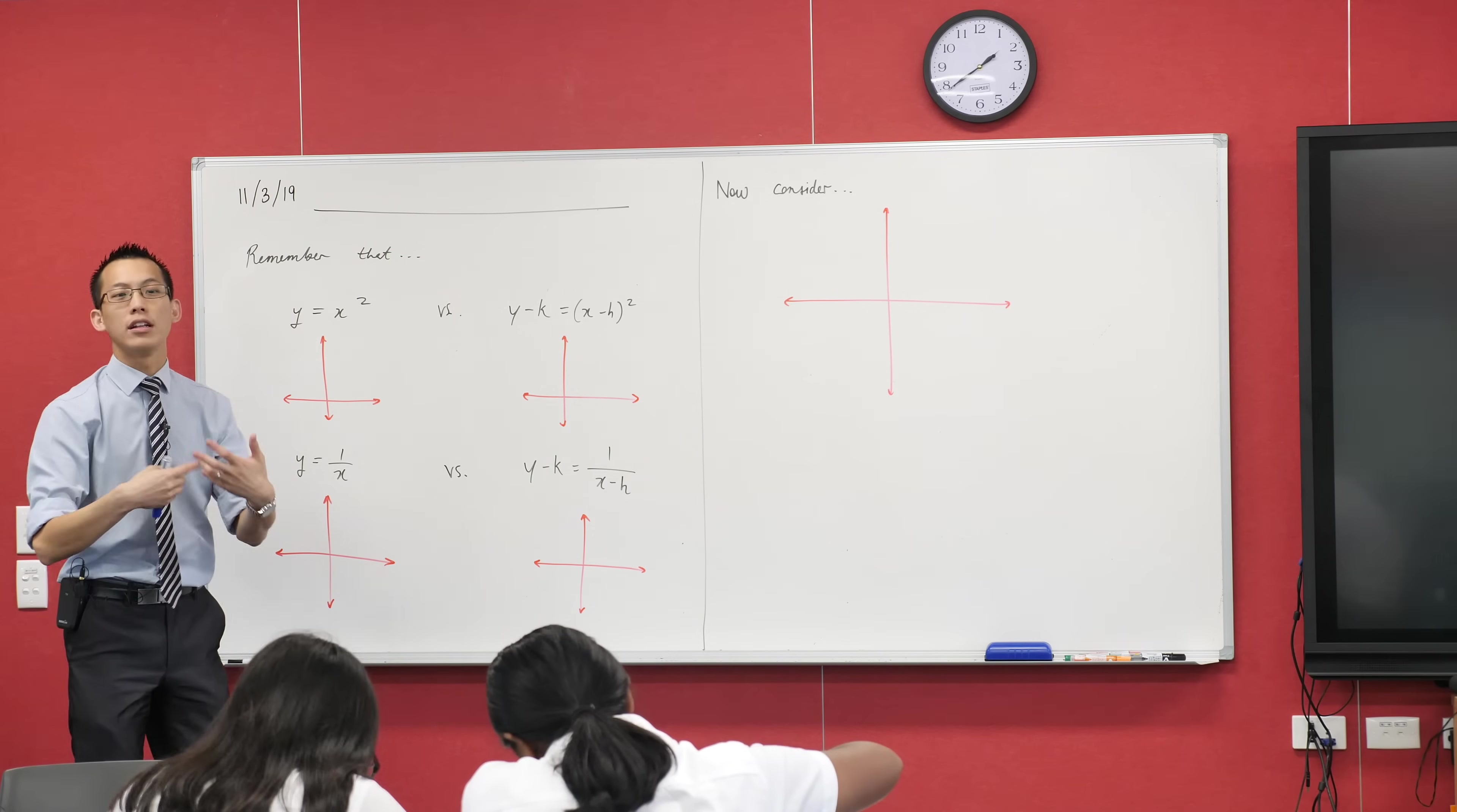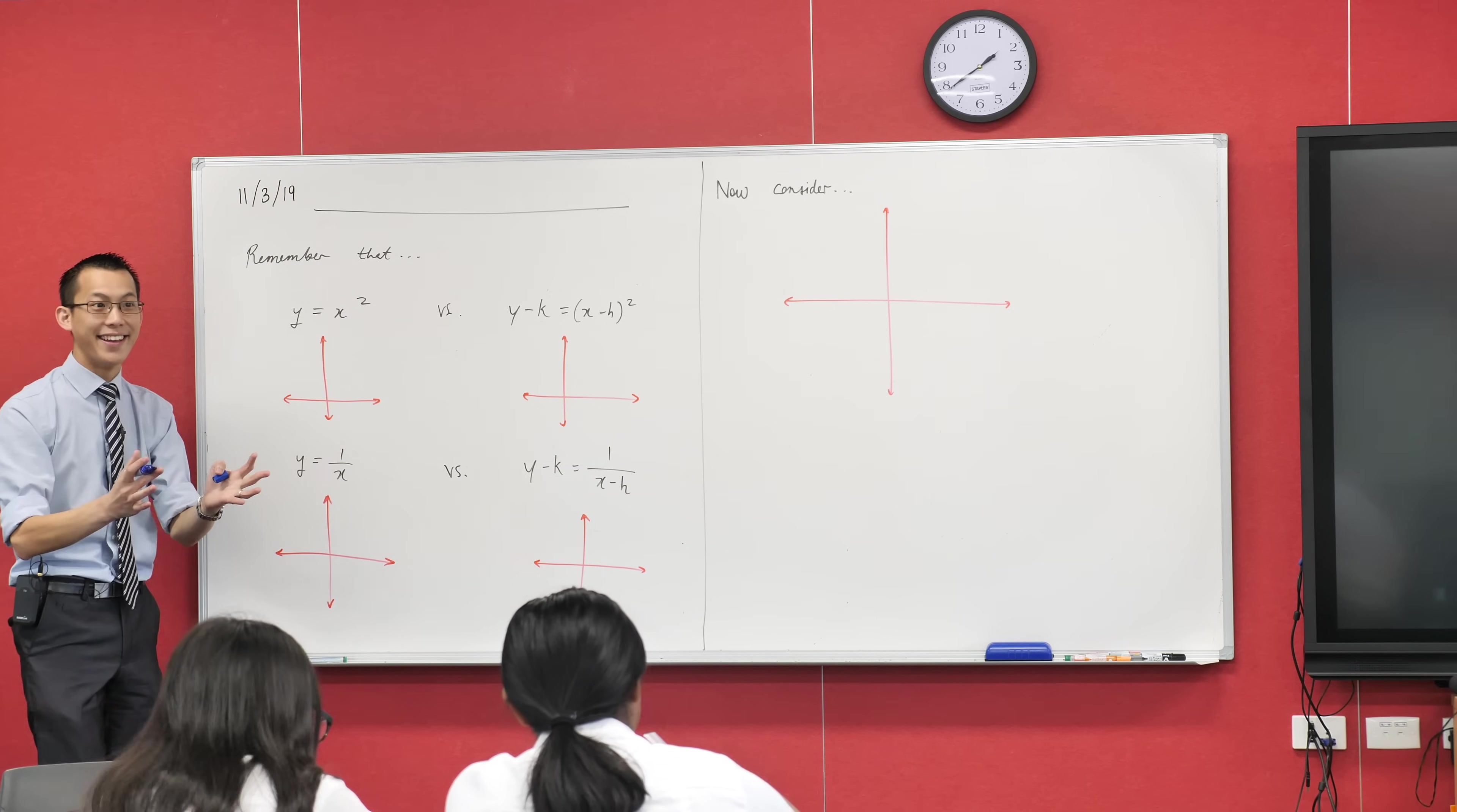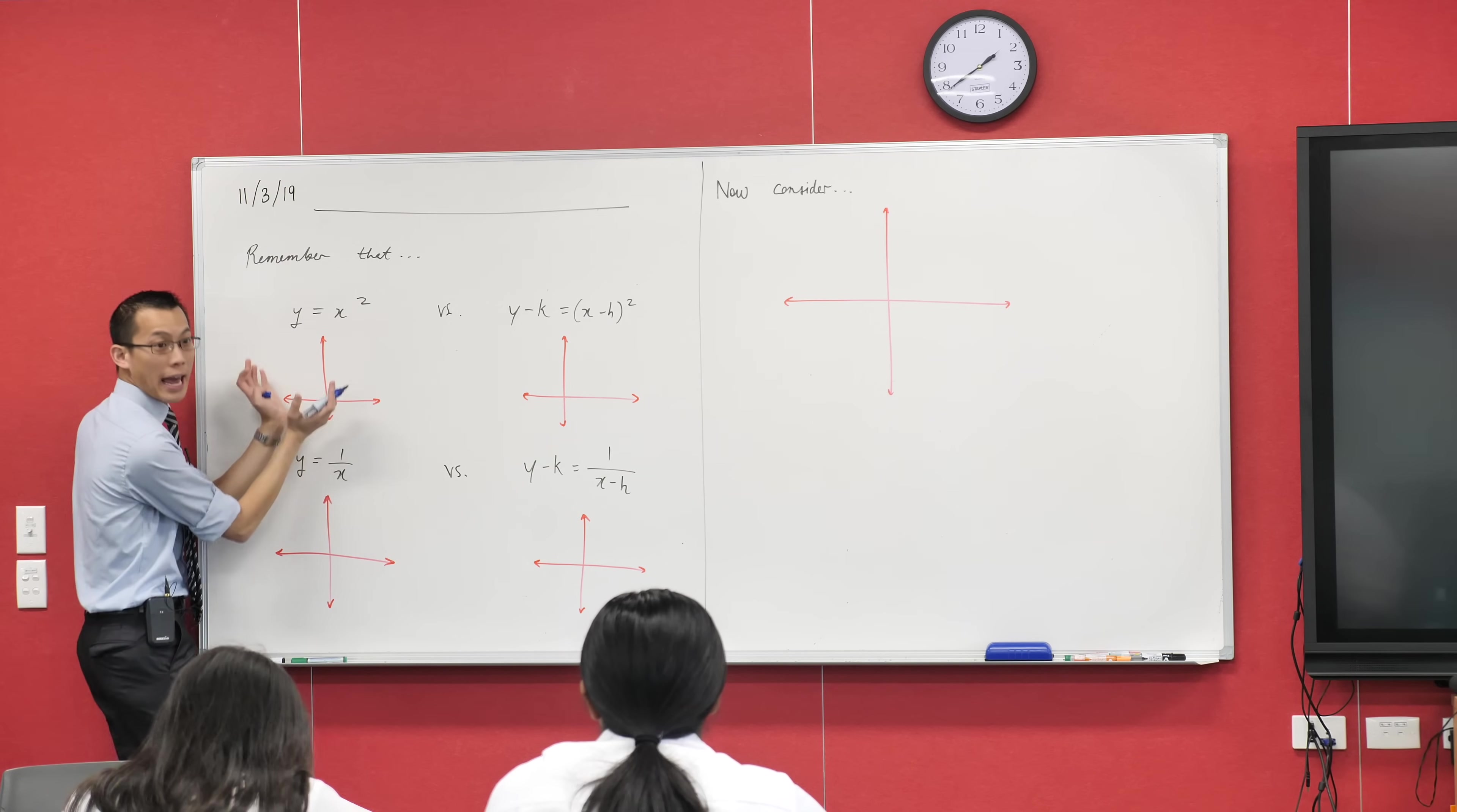We all know, we've actually known for a good couple of years now, what y equals x squared looks like. Firstly, what's the name of this shape? It's a parabola. And what can you tell me about this particular parabola, just y equals x squared? It's facing up, we say it's concave up like a smiley face.